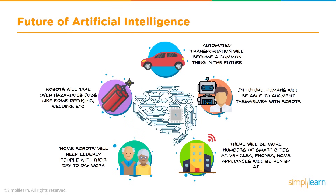Robots will take over hazardous jobs like bomb defusing, welding, and more. For the future of Artificial Intelligence, you can see a number of robotic uses already in development. People are already working on bringing these to us in a commercial and business fashion. Your own imagination can take this to the next level, or a simple Google search will show you some of the things that are out there now in addition to these.